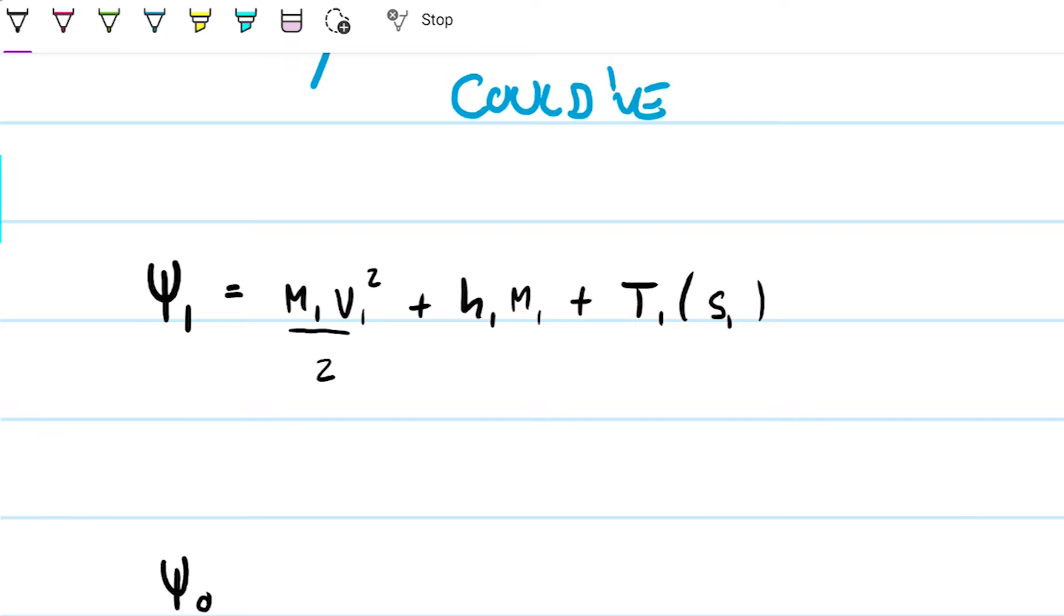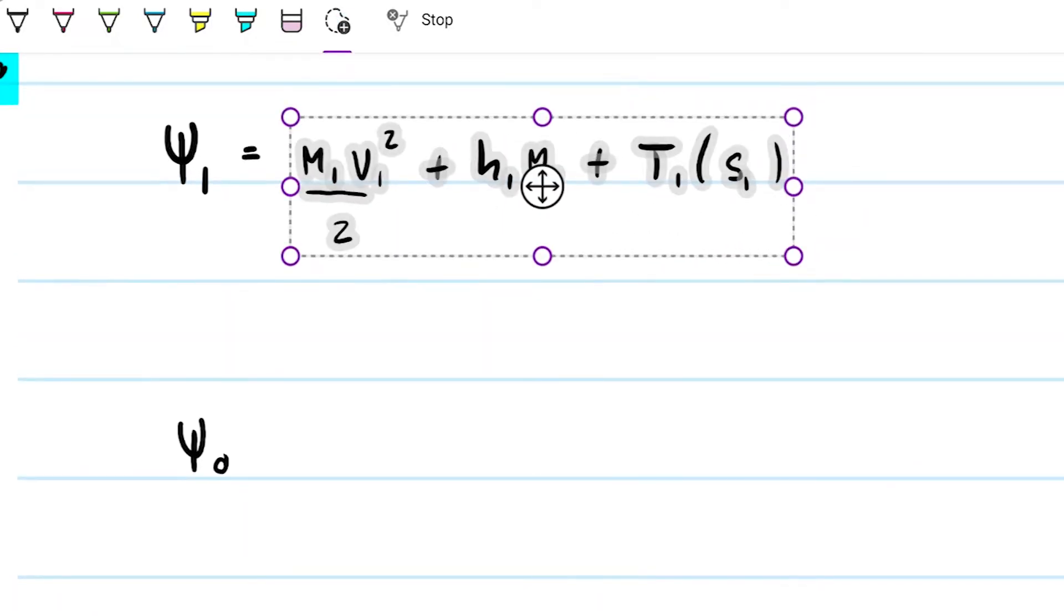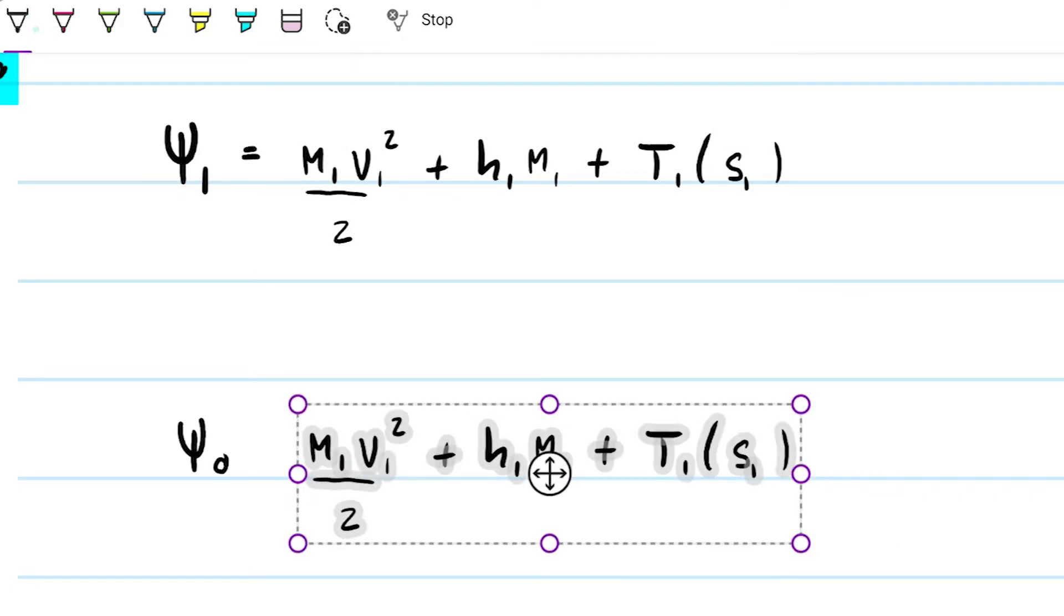What about the second state? Well, similar thing. The idea is pretty much the same. We're going to have everything the same here, except without the ones, we're going to have the knots there. T knot, S knot.